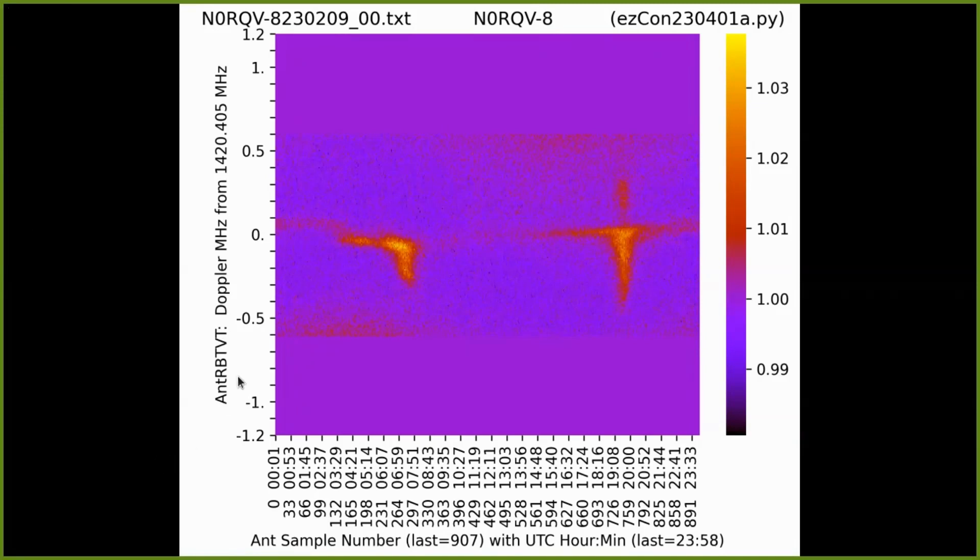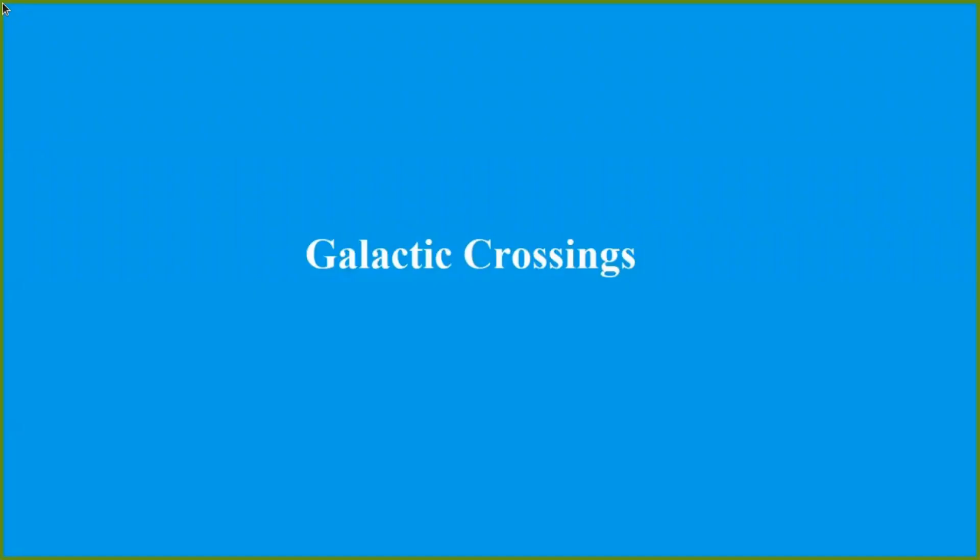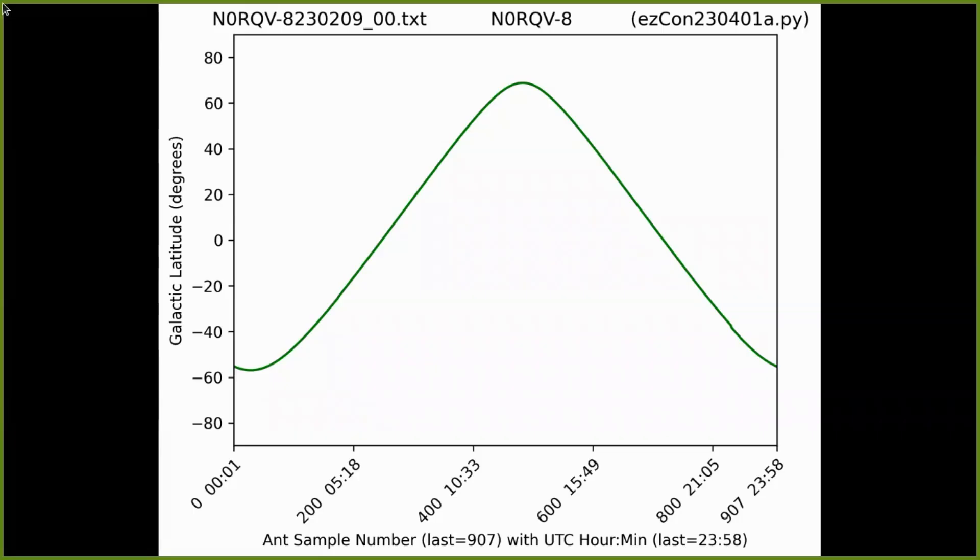This last signal antRB TVT gets recorded in the output data file, the .ezb data file. Now we move on to creating the other data file having to do with the galaxy spectra. We're going to talk about where the samples are near the galactic plane.